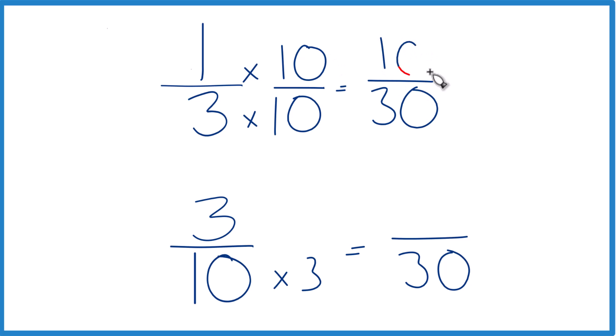One times ten is ten, and ten-thirtieths, that's an equivalent fraction to one-third. Down here we're going to multiply by three, three times three is nine.